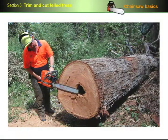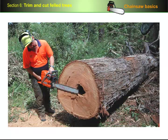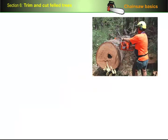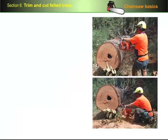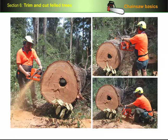If you find yourself with a very large log and you're unable to reach over to do the first cut, the easiest solution is to cut all the way down on one side first. Then walk around to the other side to complete the sequence of cuts. You still need to use the right system for a top bind or bottom bind, of course, to avoid jamming the saw.